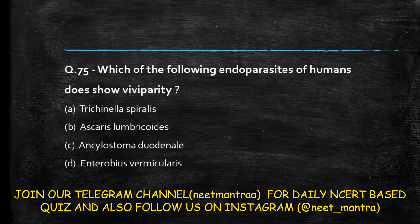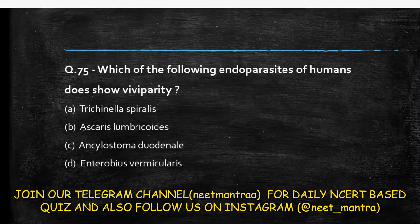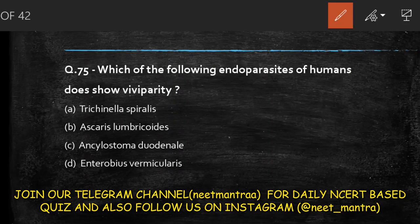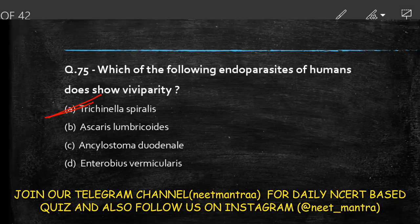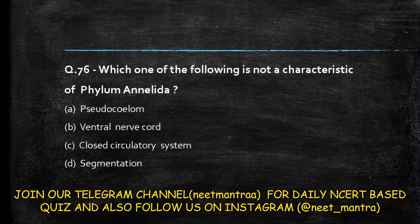Next question: which of the following endoparasites of humans shows viviparity? Options are Trichinella, Ascaris, Cyclostoma, Enterobius. The answer is option A: Trichinella spiralis, which causes trichinosis and is commonly called pork worm, encountered through undercooked pork products.